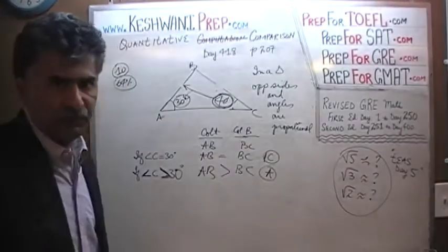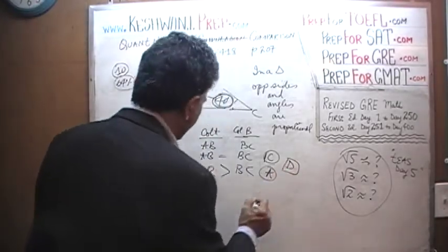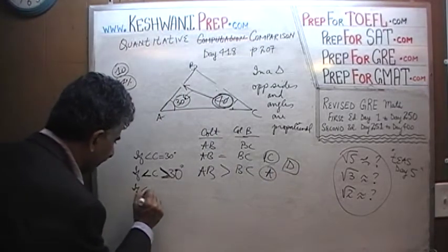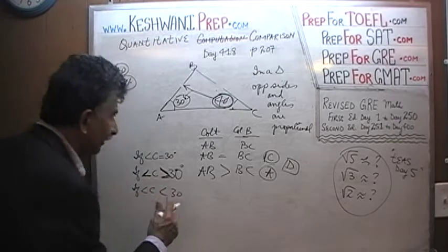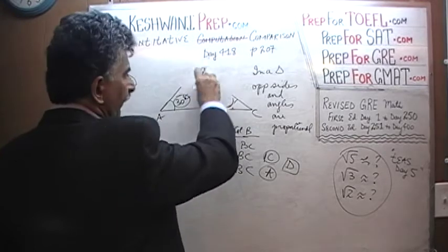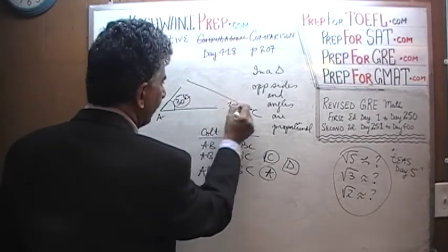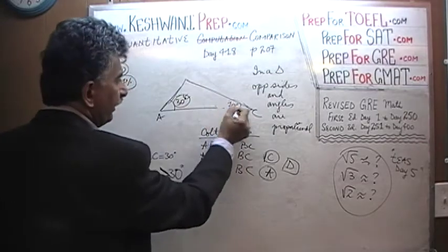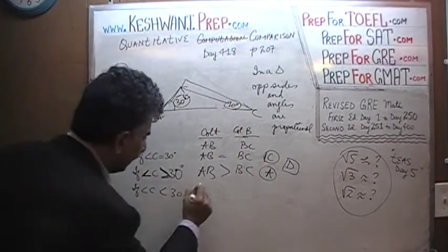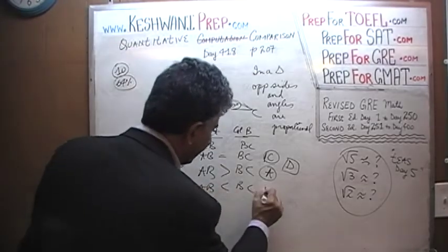As far as the exam is concerned, we are done — we are getting a conflicted answer, so the answer is D. Let's look at one more scenario. If angle C is less than 30 degrees, say only 10 degrees, then 10 degrees will face a very small side. In that case AB would be less than BC, and the answer would be B.